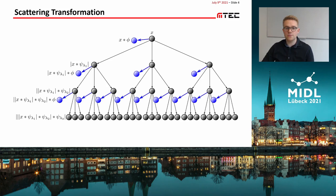The exponential increase of output feature maps with increasing order of transformation is challenging, so the possible locations of scattering transformations in a CNN are therefore quite limited. We therefore came up with the idea of using scattering transformations as an attention controlling squeeze and excitation block.